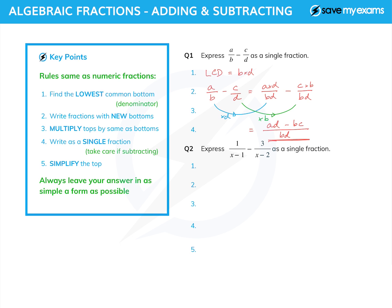The reason I've put another question on the same page is because although it looks more complicated, it's exactly the same working as the first one. We're just replacing a by 1, b by x minus 1, c by 3, and d by x minus 2. So my lowest common denominator is just the two denominators multiplied together: x minus 1 times x minus 2.